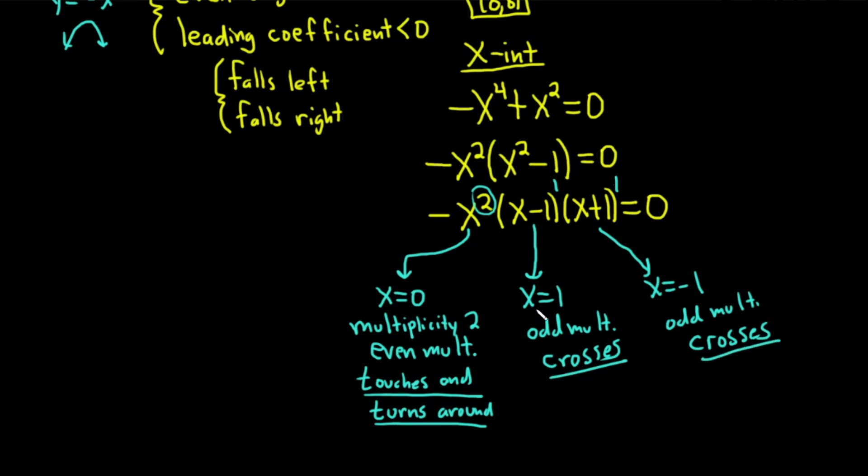Now we're ready to draw a graph. Let's do it. So here's the y-axis. And then here's the x-axis. We have x, y. And we can plot our zeros. We've got our x-intercepts. We've got 0, negative 1, and 1. So here's negative 1. Here's 1. And here's 0. I'll put tick marks so it's pretty clear that that's negative 1 and 1. And we know it falls left and falls right. So that means it must look something like this. So at negative 1, it crosses. At 0, it touches and turns around. And then at 1, it crosses. Boom. Beautiful.